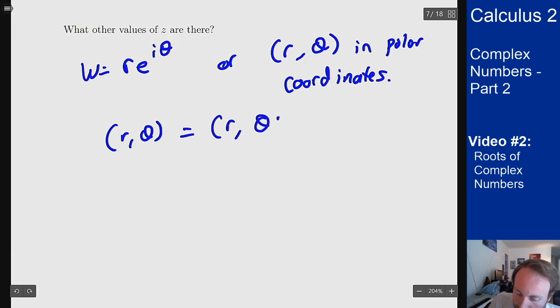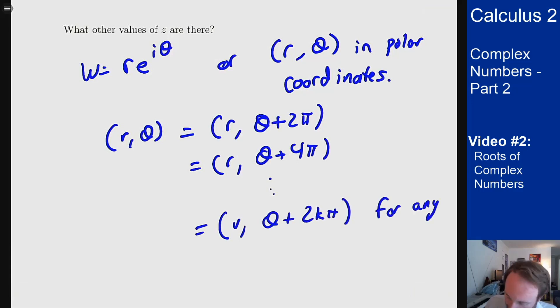or the same as theta plus 4 pi or the same as r theta plus 2k pi for any integer k. Right, this just means how many times do I wrap around the origin or on the circle before I get to the angle I care about. But all of these correspond to the same complex number because of the same point in polar coordinates.